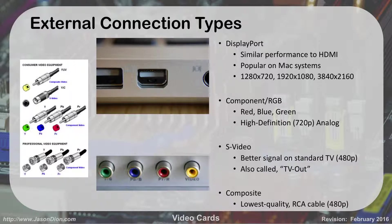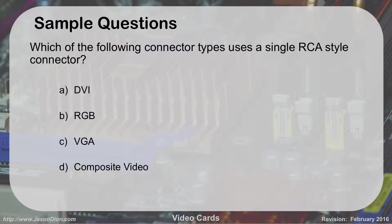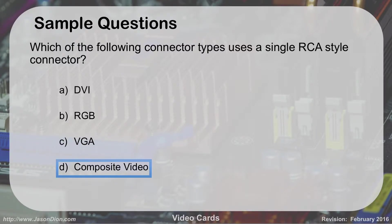For most computers nowadays, none of these legacy connectors are very popular, with the exception of DisplayPort on Macs — including mini DisplayPort and DisplayPort. So which of the following connectors uses a single RCA-style connector? DVI, RGB, VGA, or composite video? The answer is composite video — that yellow connector, really old style, standard definition TV.